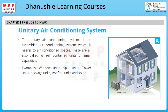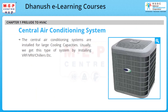The central air conditioning systems are installed for large cooling capacities. Usually, this type of system is implemented by installing BRF, BRV, or chillers, etc. Now let's look at a table that compares each system.